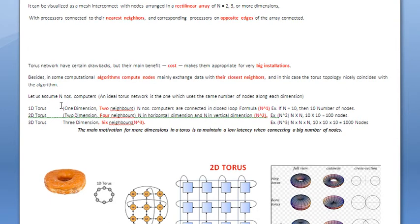For example, in a 1D array, each node has two neighbors in the closed network. In 2D TORUS, each server has four neighbors, and in 3D array, each server has six neighbors.